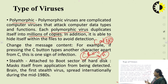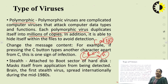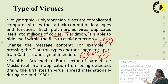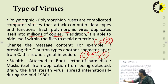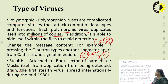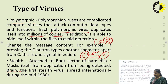The second type is the stealth virus. A stealth virus can attach itself to the root sector of the hard disk. It masks itself from applications and from being detected, making it difficult to identify. Brain is the first stealth virus, which spread internationally during the mid-1980s.